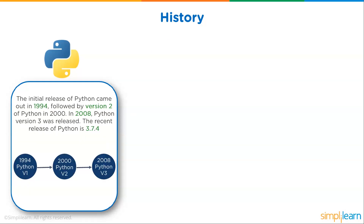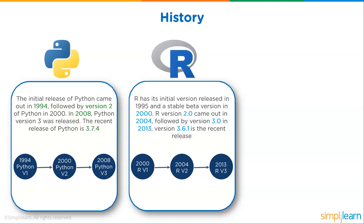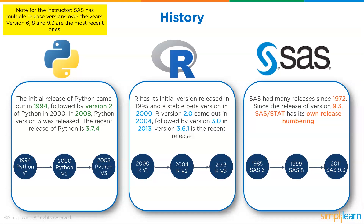Python's initial release was in 1994, followed by version 2 in 2000, and Python version 3 in 2008. The recent release is 3.7.4, with 3.8 coming out as a stable version in 2019. R had its initial release in 1995, with a stable beta in 2000, version 2.0 in 2004, and version 3.0 in 2013; version 3.6.1 is the recent release. SAS has had many releases since 1972, and since version 9.3, SAS Stat has its own release numbering.